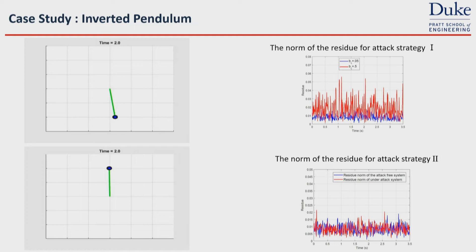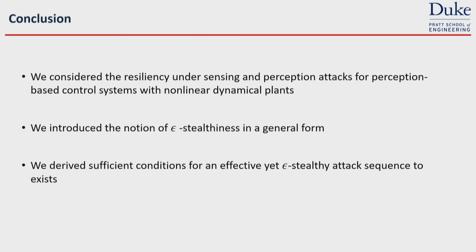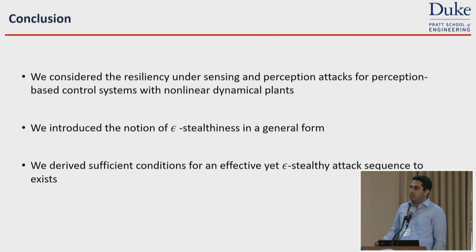We also implemented the attack on an autonomous vehicle that uses an end-to-end controller to keep the car between the lanes. The attack starts at time zero. The car is in the center of the road before the attack, but once the attack starts, it deviates and goes off the road. Meanwhile, we showed that the attack is STLC for such a system. In conclusion, we considered the resiliency of perception-based control systems with nonlinear dynamics, introduced the notion of STLC-ness in a general form independent of the deployed intrusion detector, and derived sufficient conditions under which there exist epsilon-alpha impactful attacks. Thank you.